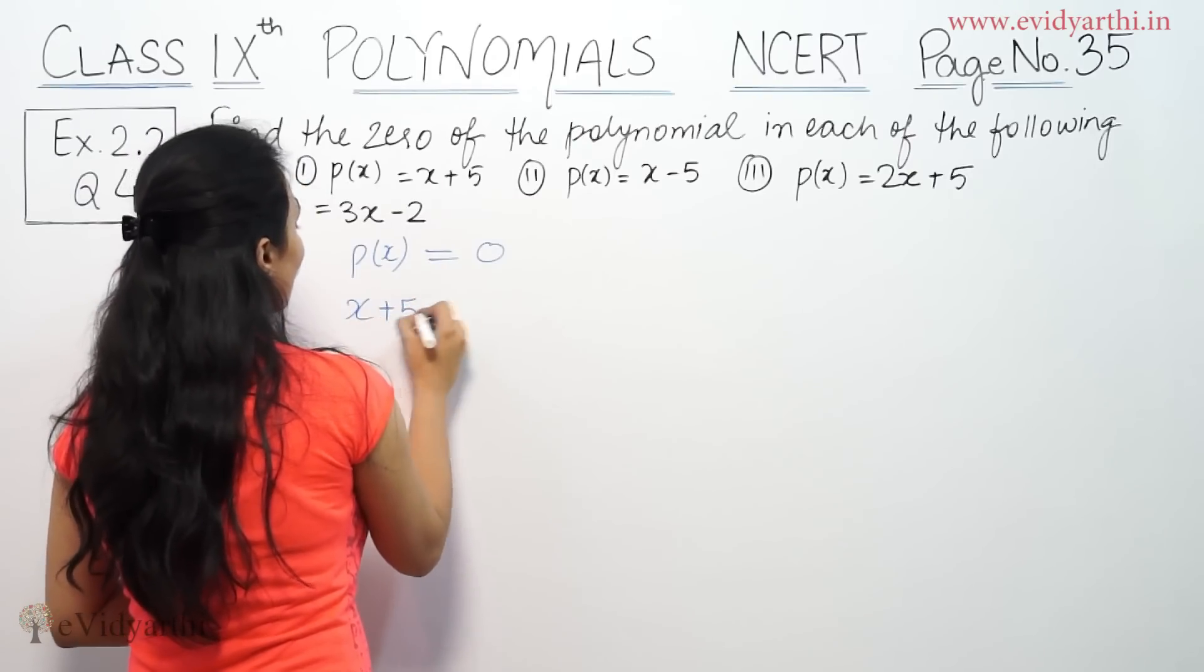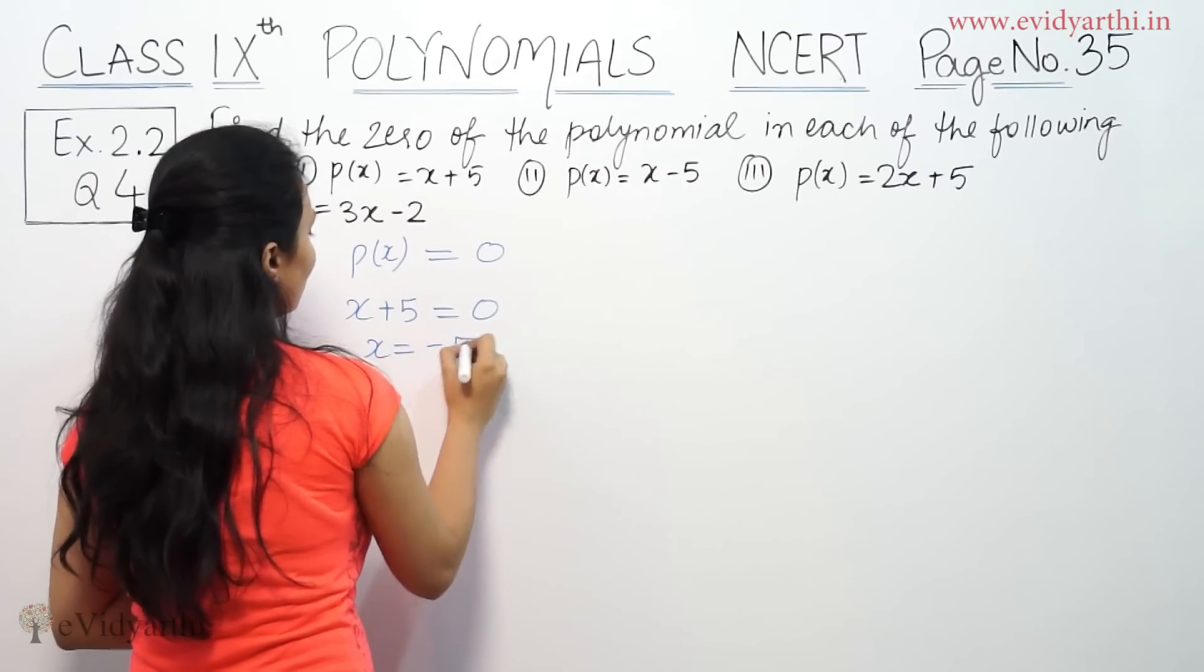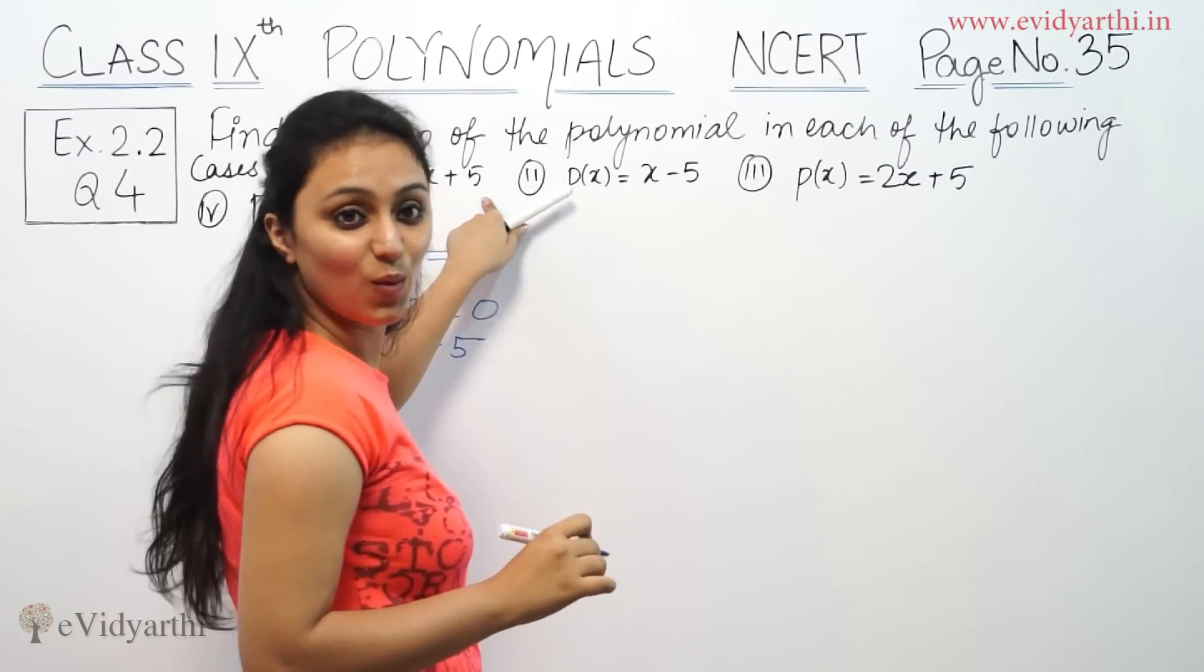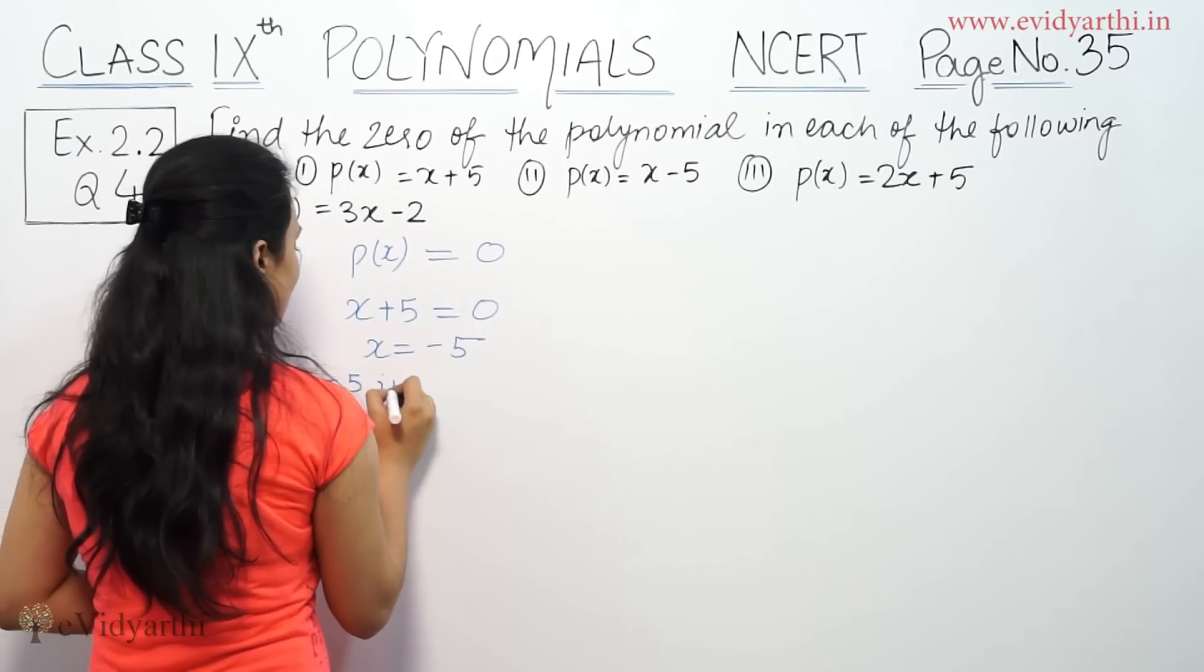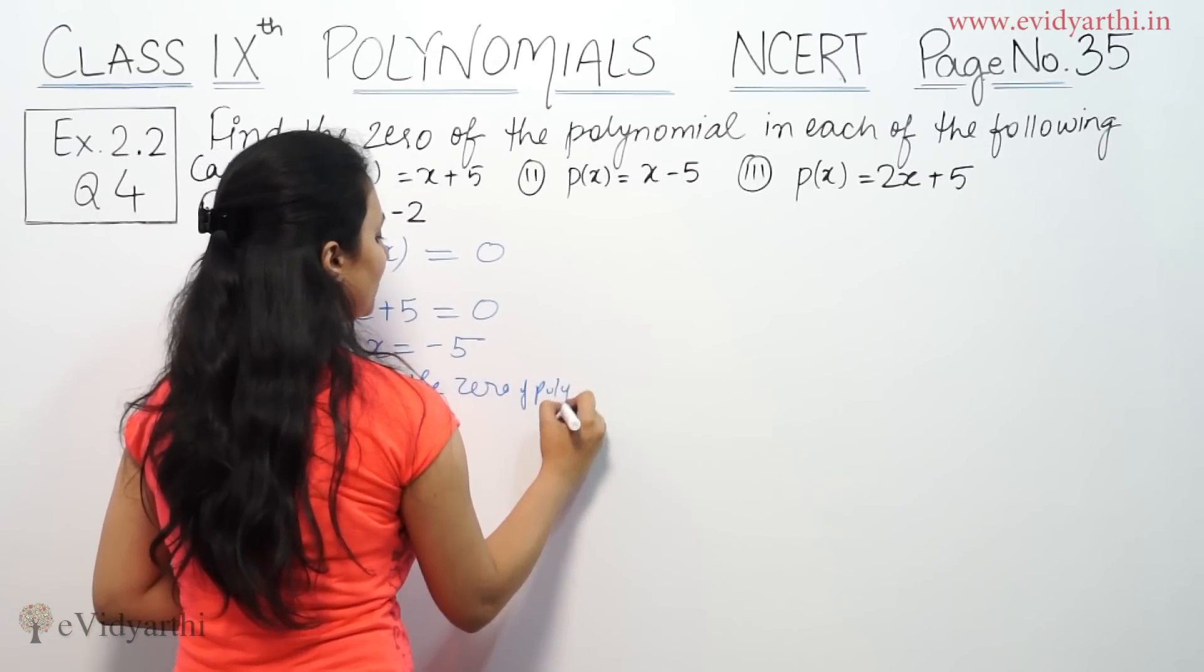The polynomial we have given is x plus 5 equals to zero, so x is equal to minus 5. This polynomial's zero is minus 5. Therefore, minus 5 is the zero of the polynomial.